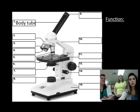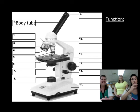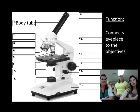Now we're going to go through the functions and parts of the microscope. First we have the body tube, that's number one. This portion connects the eyepiece to the objectives.